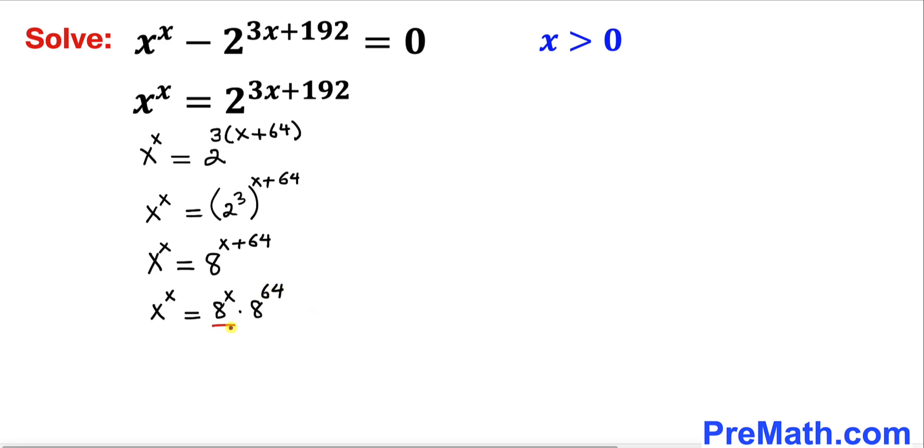Now let's divide both sides by 8^x. This cancels out on the right side, and on the left side this becomes (x/8)^x = 8^64.